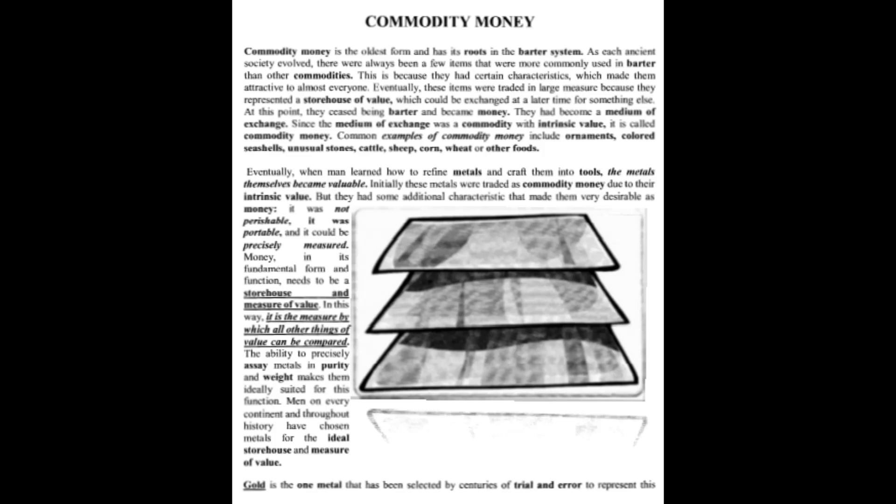Eventually when man learned how to refine metals and craft them into tools, the metals themselves became valuable. Initially these metals were treated as commodity money due to their intrinsic value. Intrinsic value means something has a value other than what it is used for — so if a piece of paper represents a piece of metal, it has intrinsic value because it's worth more than just the paper, since it could be redeemed for metal. These metals had additional characteristics that made them desirable as money: they were not perishable, they were portable, and they could be precisely measured. Money in its fundamental form needs to be a storehouse and measure of value — the measure by which all other things of value can be assessed.